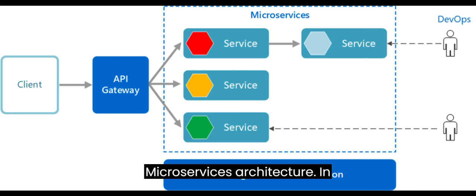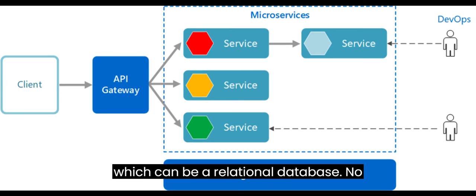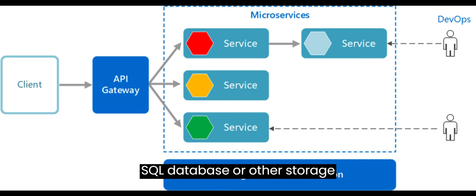Microservices architecture: In this pattern, data is managed independently by microservices. Each microservice has its data store, which can be a relational database, NoSQL database, or other storage solutions. This pattern promotes scalability and agility.